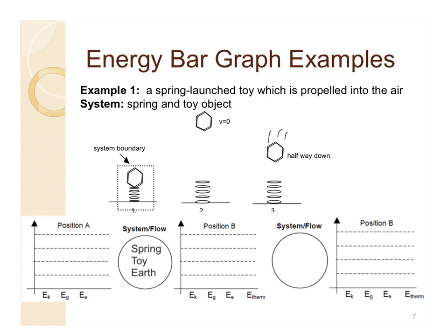Then the next thing you do is decide how energy is stored in your system at each point. It's easiest to take one point at a time, so starting in picture A, we consider each of the possible ways energy can be stored. Nothing is moving so there cannot be any kinetic energy. The object is at its lowest point in the whole problem, so there's not going to be any gravitational energy. I like to write a reminder that we've defined this lowest height as the point where gravitational energy equals zero.